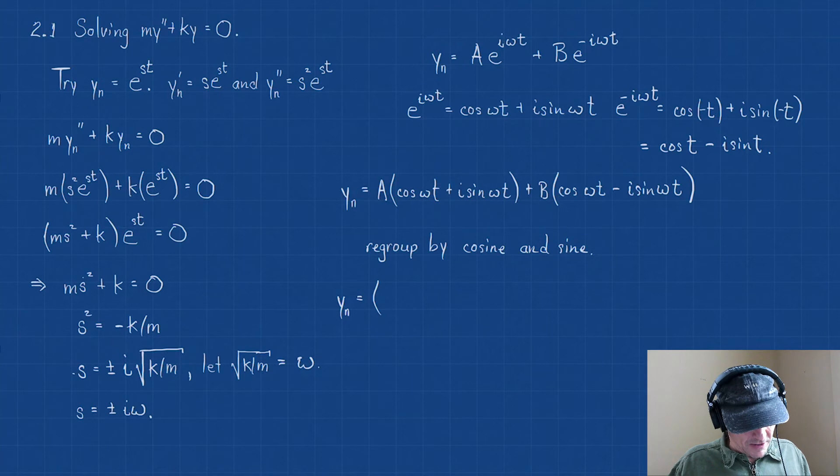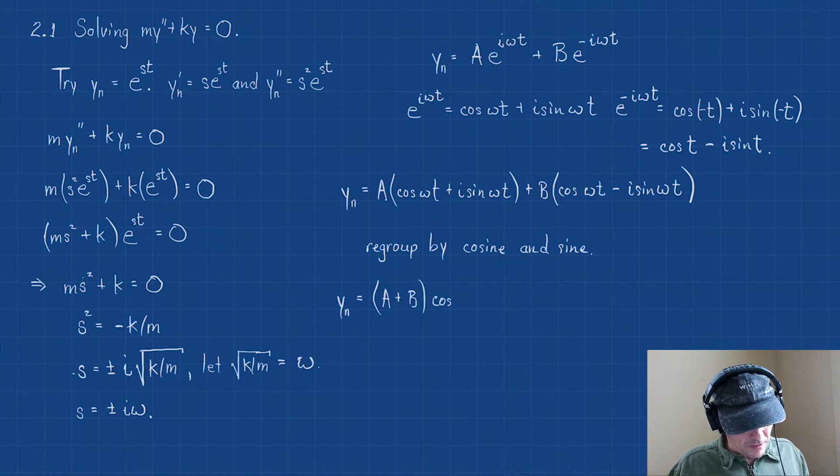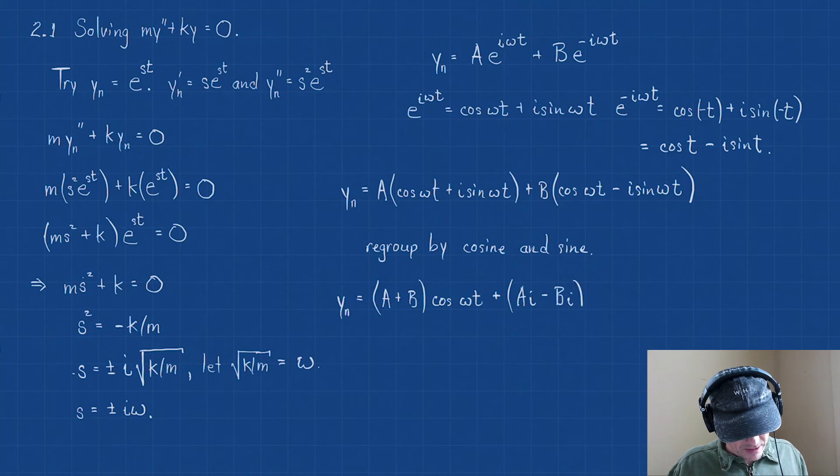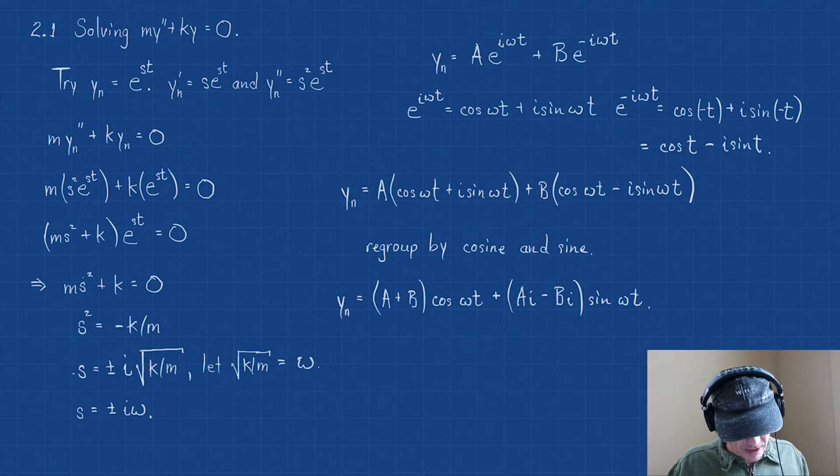Now let's do this. Let's regroup this by cosine and sine. If I factor out a cos(ωt), I'm going to have (A + B)·cos(ωt). And then if I factor out the sine piece, I'm going to have (A·i - B·i)·sin(ωt).